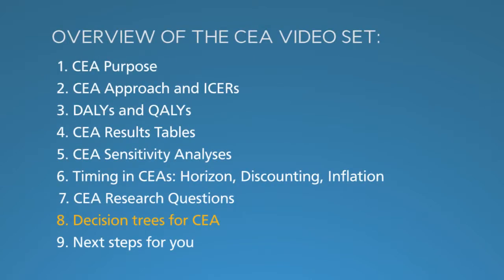So far in this series, you've learned why to do CEAs and key elements of how: the incremental cost-effectiveness ratio, DALYs and QALYs, sensitivity analyses, and other issues. In the last segment, you learned how to present CEA in a research proposal. In this segment, we will look at decision trees for CEA. We have a few introductory comments and then a short animation on the use of decision trees to structure your analysis.